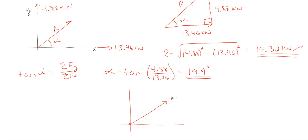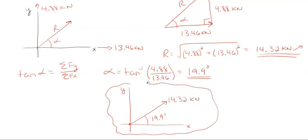The resultant is 14.32 kilonewtons in that upright direction at an angle of 19.9 degrees off of the x-axis. That would be my final answer. That method shows you how to solve the problem using the rectangular rule or rectangular method. There is a previous video on this channel showing how to solve this problem using the parallelogram rule, so if you want to see that, check it out.